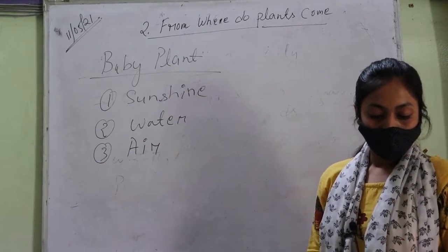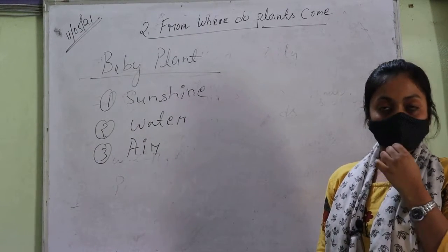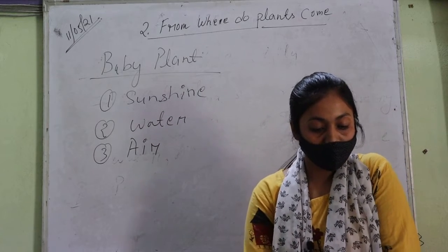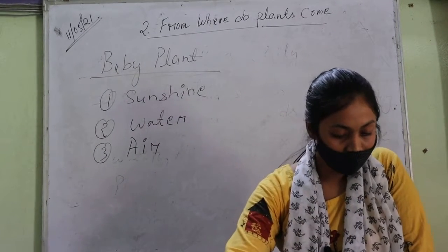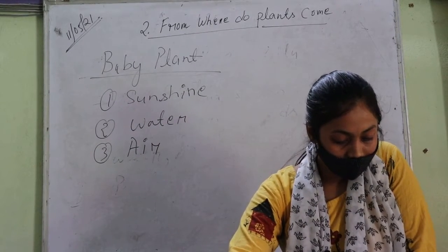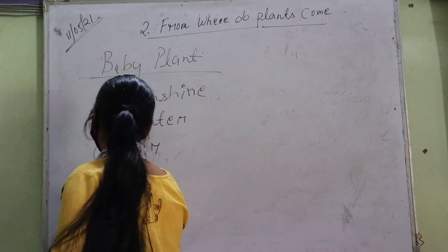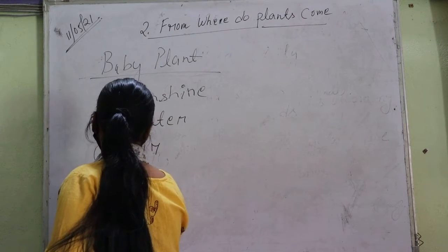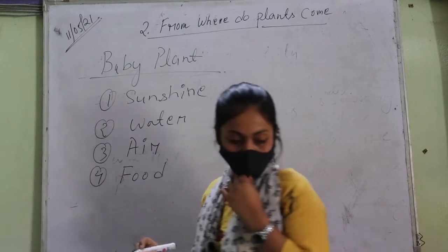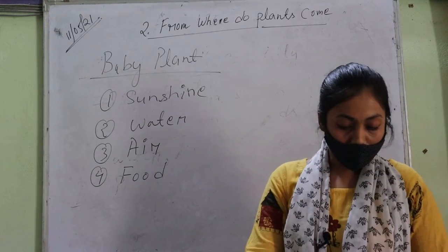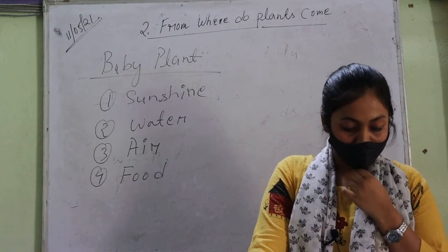Next is air. Air makes it breathe - hawa help karta hai seed ko breathe karne ke liye. Next, last one is food. The seed and the soil give food to the baby plant.